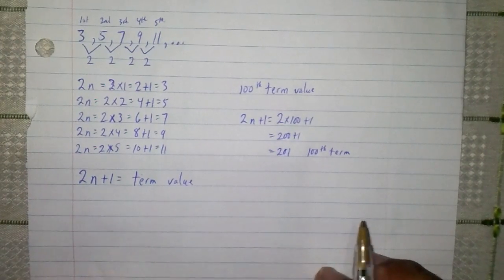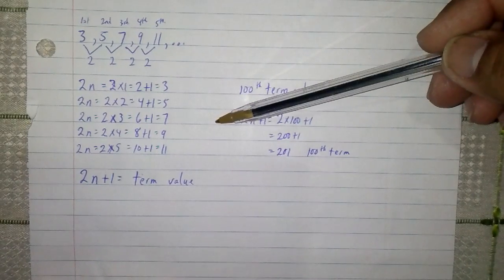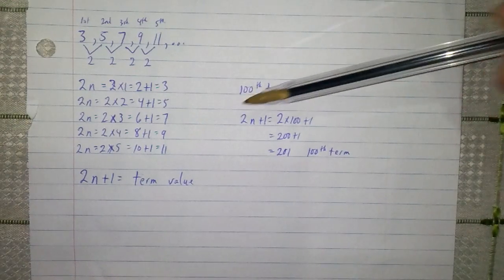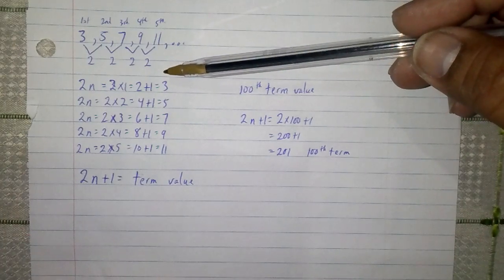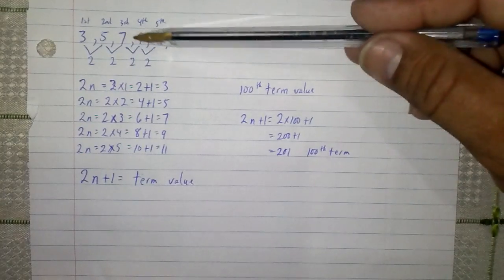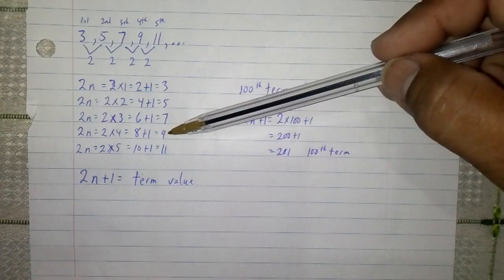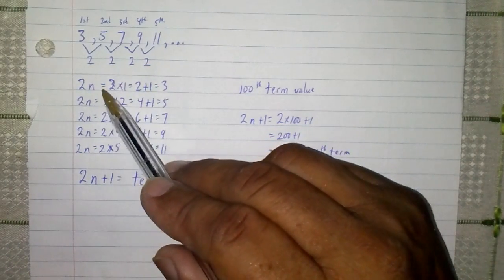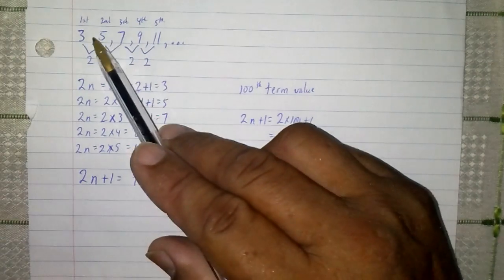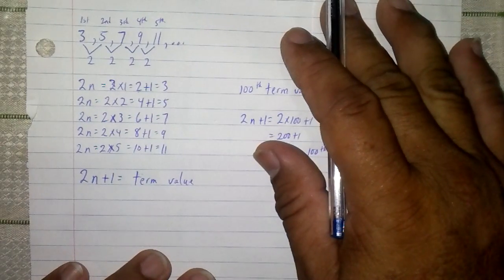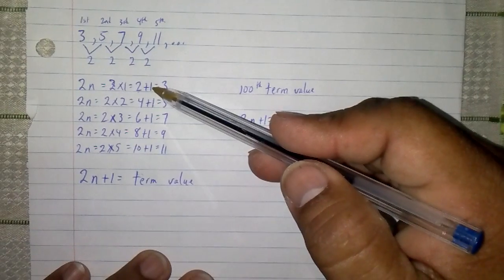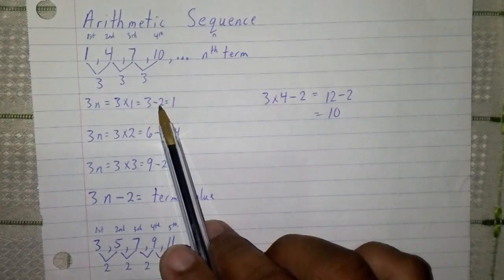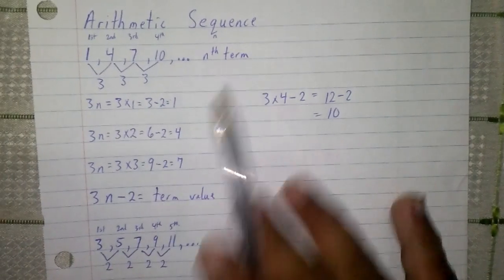This is the arithmetic sequence. In both examples, we added or subtracted a consistent amount from one term to the next. In an arithmetic sequence, there's a consistent difference between terms, and then we apply an adjustment. The plus 1 was the adjustment in the second example, and in the first example the adjustment was a minus 2. This concludes our topic on arithmetic sequence. Please stay tuned and watch our next video.